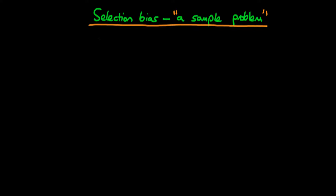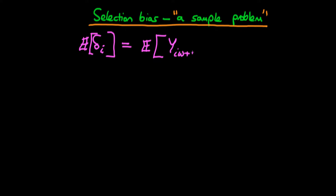The idea is that, in general, what we're interested in estimating is the average causal effect. That's the expectation of this term delta_i, which represents the difference in potential level of some outcome variable — the expectation of Y if an individual chooses treatment W+1, compared with if that individual chose W. So what we're interested in is the difference between these two potential levels of outcome.